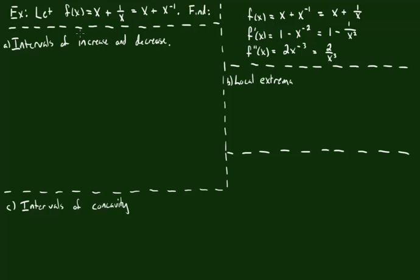Hey everybody, today we're going to be using the derivatives of a function to understand its shape and how it behaves when you look at the graph. We're going to take a look at the function x plus 1 over x today, which is x plus x to the negative first.